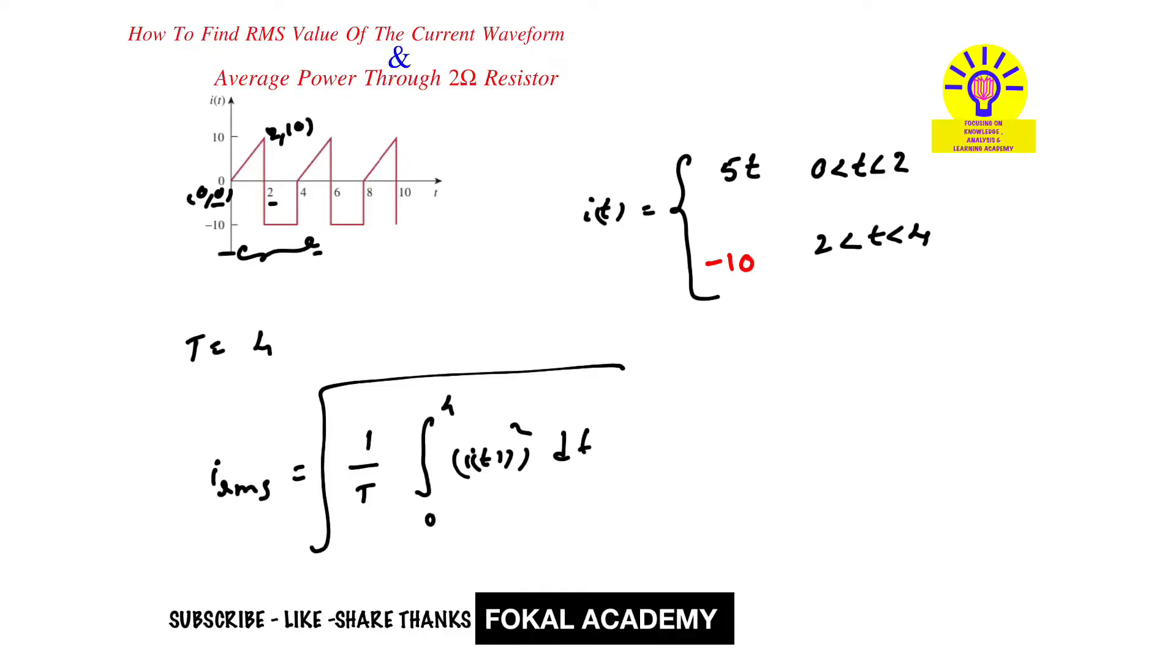Now by applying this formula we will get RMS value for the given waveform. Here T is the time period for the given waveform, we got 4. And here i(t) current waveform, we have two limits. Now this is a definite integral. Apply two limits, so then it becomes square root of...